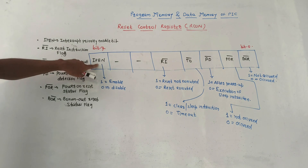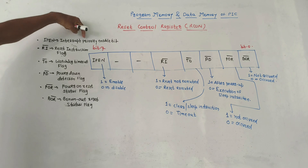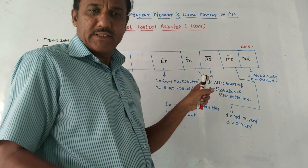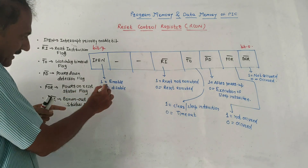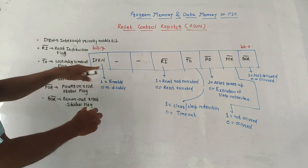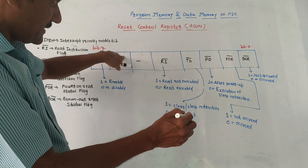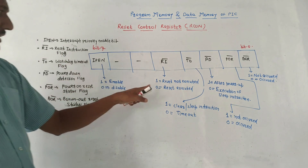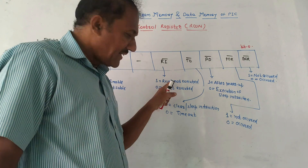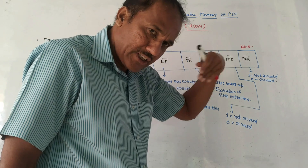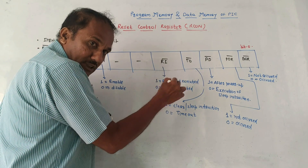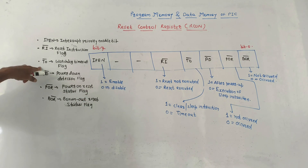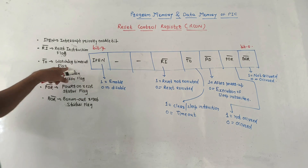Bit number seven is IPEN — the Interrupt Priority Enable bit. If this bit is one, it indicates that interrupt priority is enabled; zero indicates interrupt priority is disabled. Bits six and five are unused. Bit RI-bar is the Reset Instruction Flag — if this bit is one, the reset operation has not been executed; if zero, the reset operation has been executed.